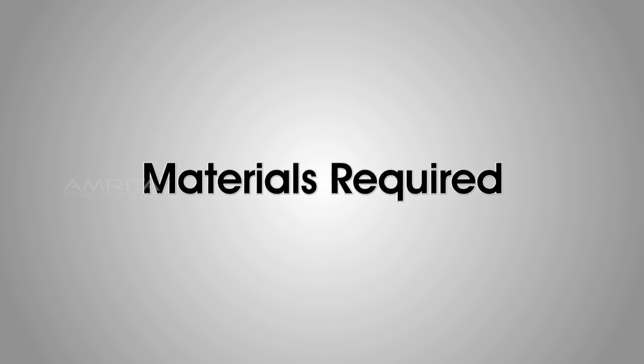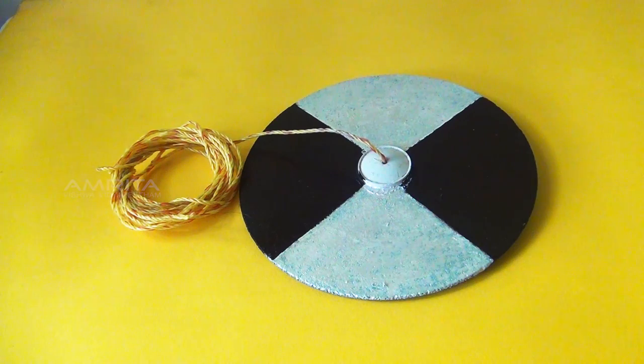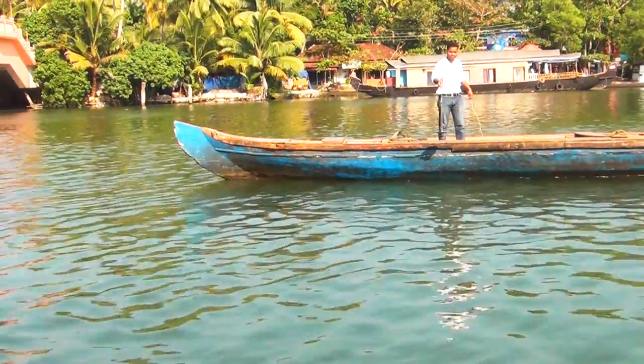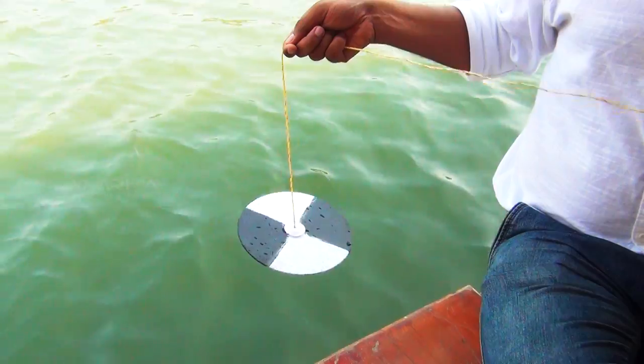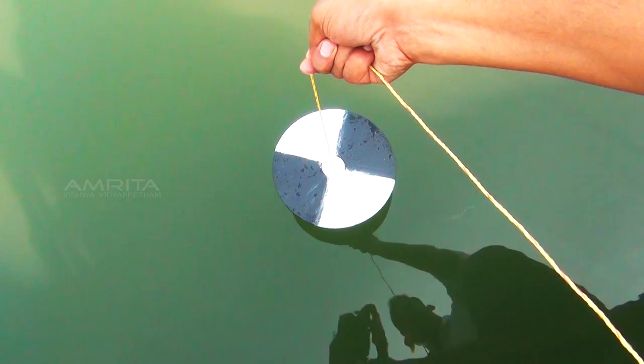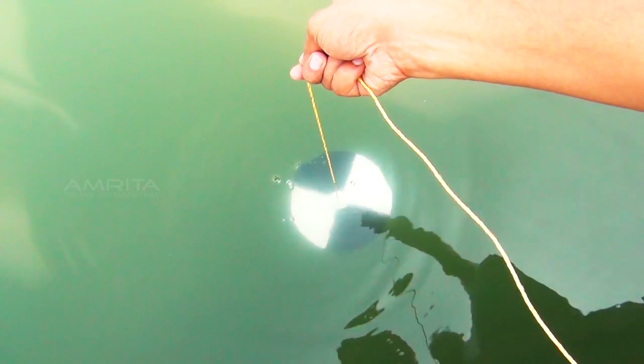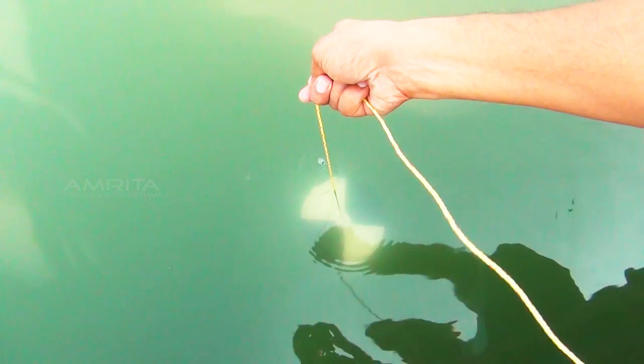Materials required: Secchi's disk tied with a rope of moderate thickness and a meter tape. Procedure: Reach the centre of the pond in a small boat. Slowly immerse the Secchi's disk into water vertically holding the rope tightly till the black and white segments of the disk disappear.